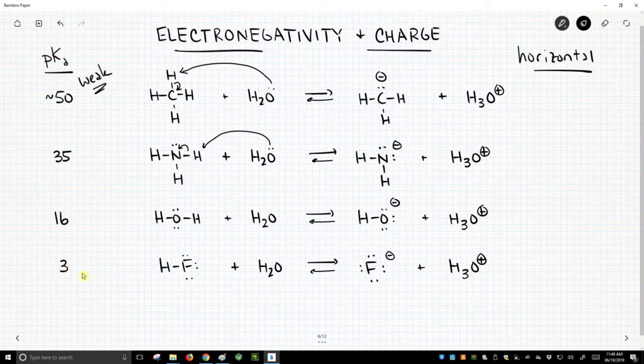We can see that as we go across the periodic table, we go from weak to strong. This correlates with electronegativity, because electronegativity is the horizontal periodic table trend.